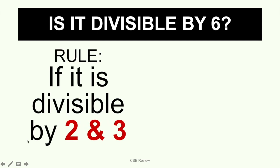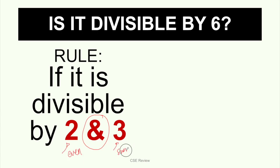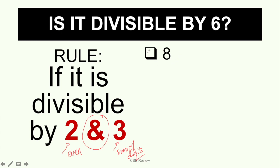A number is divisible by 6 if it is divisible by both 2 and 3. It can't be just one — it has to be both. For divisibility by 2, the number has to be even. For divisibility by 3, the sum of the digits must be divisible by 3. So you check both. For our first example, 8: it is even, but it is not divisible by 3, so this number is not divisible by 6.